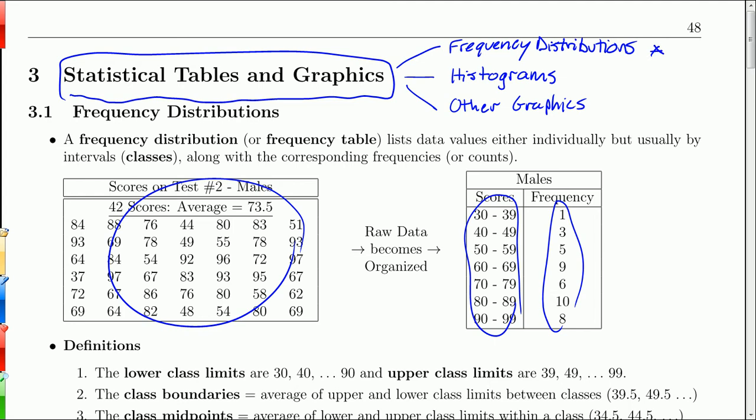And then after that, we'll convert our frequency distributions into histograms. And the frequency distributions come not only in frequency, but there's also relative frequency, cumulative frequency, and relative cumulative frequency. And then we'll convert those tables into histograms, which is just a type of bar graph.